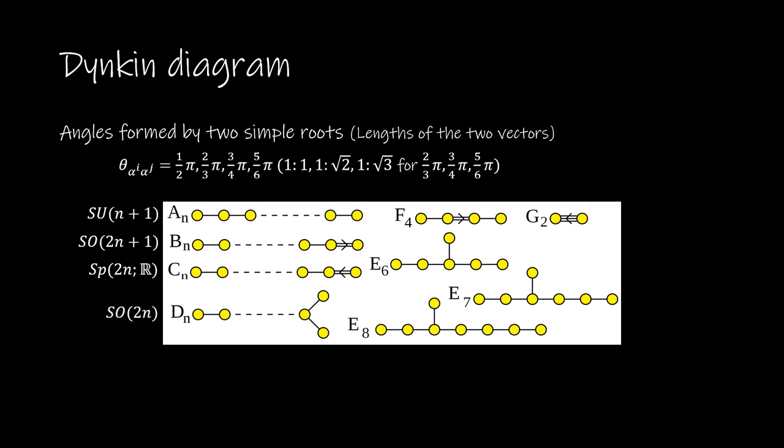Let's represent the simple root with a circle. Connect the two circles with 0, 1, 2, 3 lines according to pi over 2, 2 pi over 3, 3 pi over 4, 5 pi over 6, and draw an arrow from the longest to the shortest. These diagrams are called Dynkin diagrams.